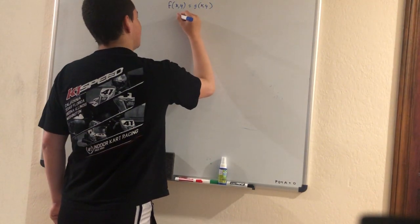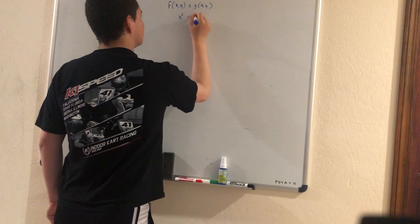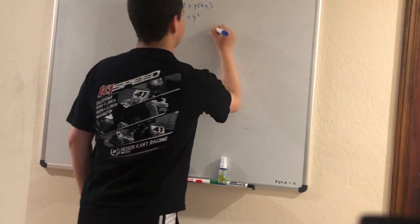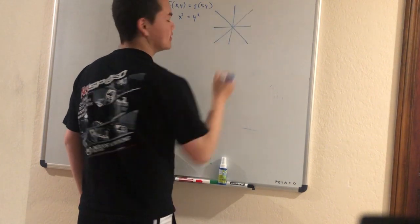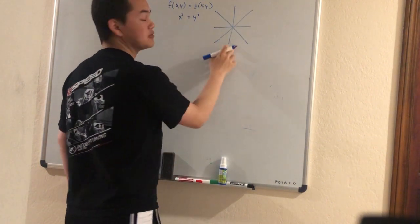As an example, x squared equals y squared is a graph, and what will this look like? The solution set is this plus that. This is x squared equals y squared.